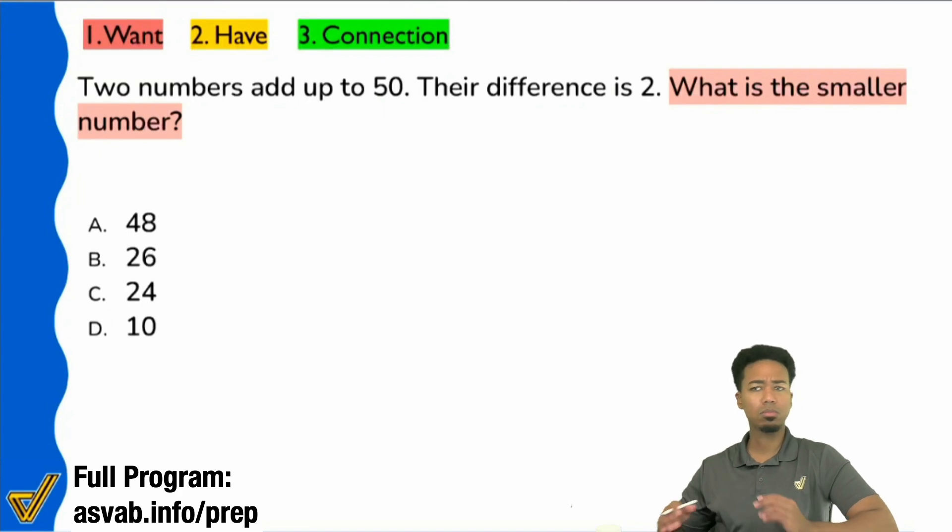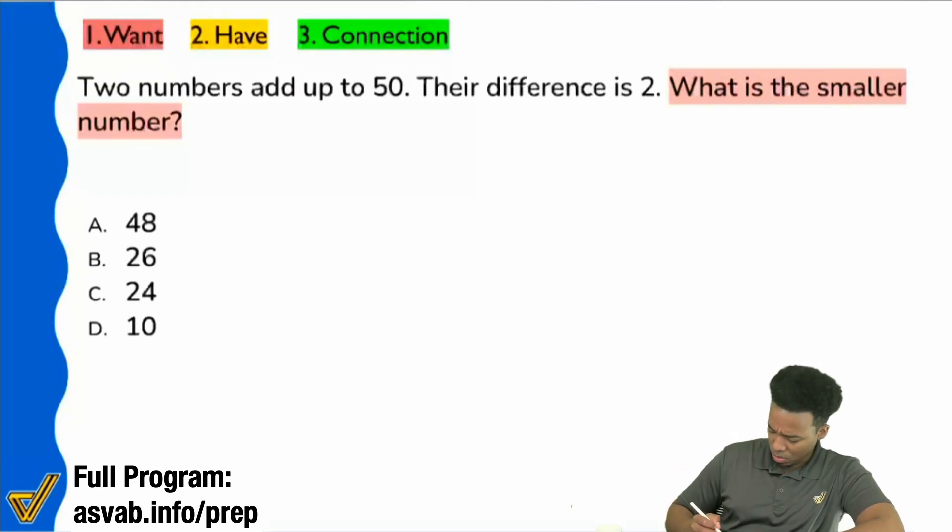So is it all right with you guys if, like the previous question or similar questions, I've been using A and B for the two numbers? Is that okay? Okay. Cool. So let's go ahead and try that out. Let's go ahead and say we have A and B.